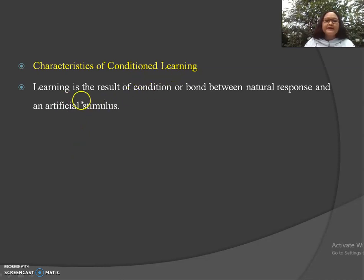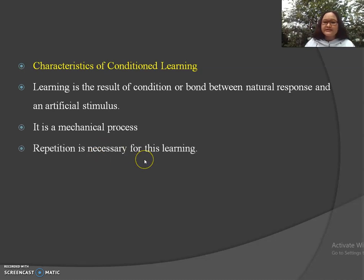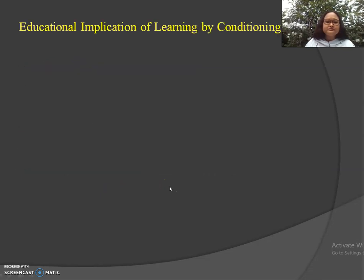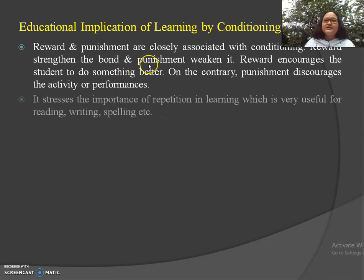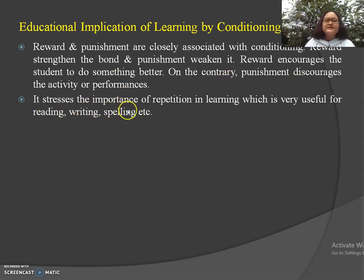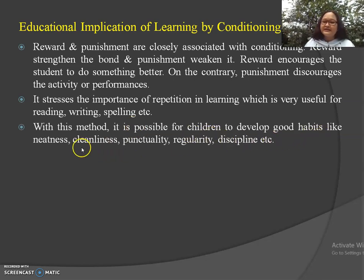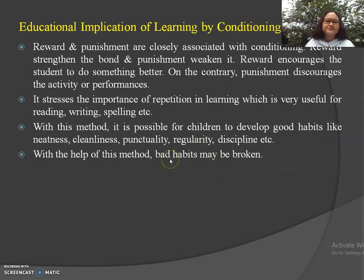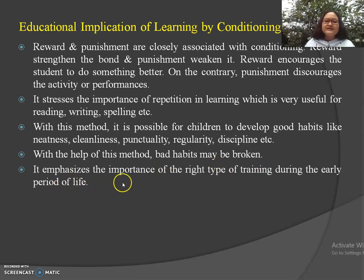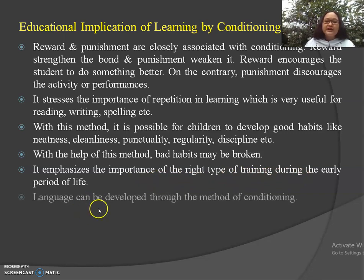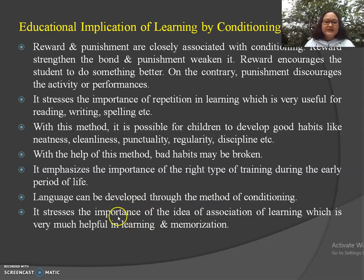The characteristics of conditioning learning: learning is the result of a bond between a natural response and an artificial stimulus. It is a mechanical process, and repetition is necessary. There is no need for higher intelligence in conditioning learning. Educationally, reward and punishment are closely associated with conditioning — reward strengthens the bond and punishment weakens it. It stresses the importance of repetition, useful for reading, writing, spelling, etc. Through this method, children can develop good habits like neatness, cleanliness, punctuality, regularity, and discipline, and bad habits may be broken. It emphasizes the importance of the right type of training during the early period of life, and language can be developed through conditioning. It also stresses the importance of association in learning, which is helpful in memorization.